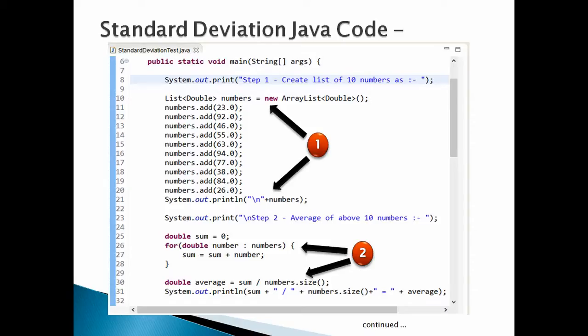Step 2: calculate average or mean of the numbers. Create a double variable say sum, initialized to 0. Apply for each loop over the list of numbers, iterate the list and calculate sum of numbers in the list.